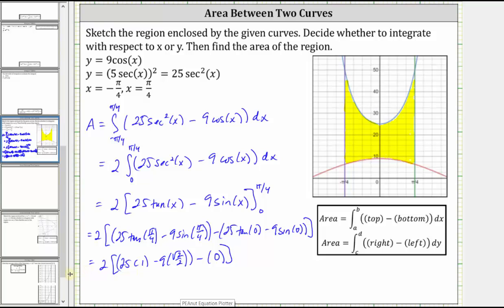And now let's distribute 2 to find the exact area. We have 2 times 25 minus 2 times 9 square root 2 divided by 2. Here, 2 divided by 2 simplifies to 1. So the exact area is 50 minus 9 square root 2.